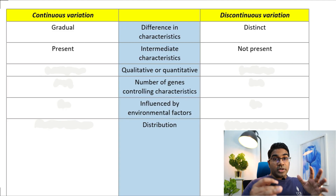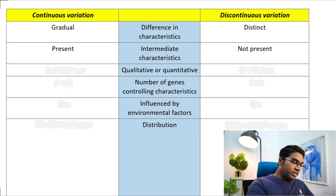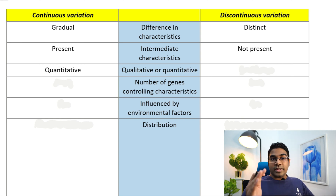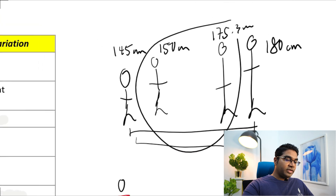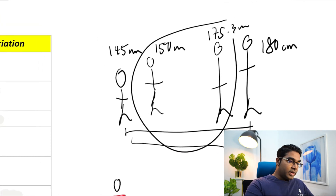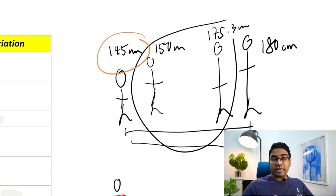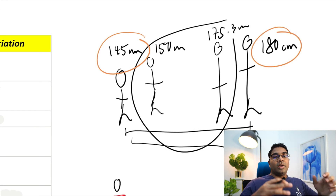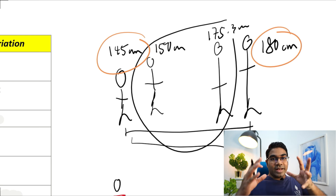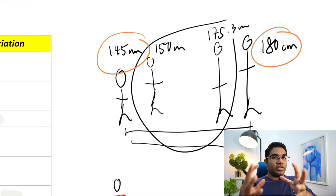In continuous variation, the characteristics are usually quantitative. This means that you can actually quantify the characteristics, such as height. We can quantify the height of a person as 145 centimeters or 180 centimeters. We can assign a value to this characteristic.